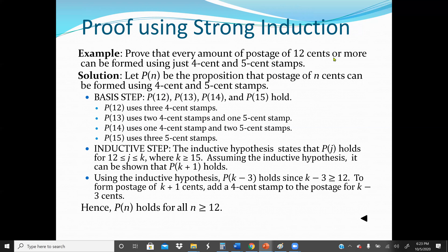A postage of 12 cents or more can be formed using 4-cent and 5-cent stamps. P(12) uses three 4-cent stamps; P(13) uses two 4-cent stamps and one 5-cent stamp; P(14) uses one 4-cent stamp and two 5-cent stamps; P(15) uses three 5-cent stamps. That's the basis.